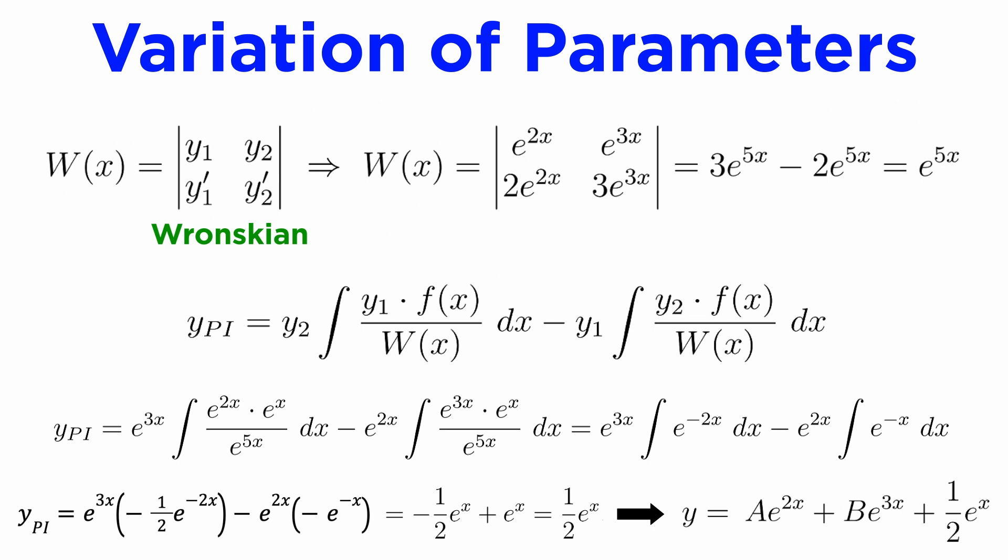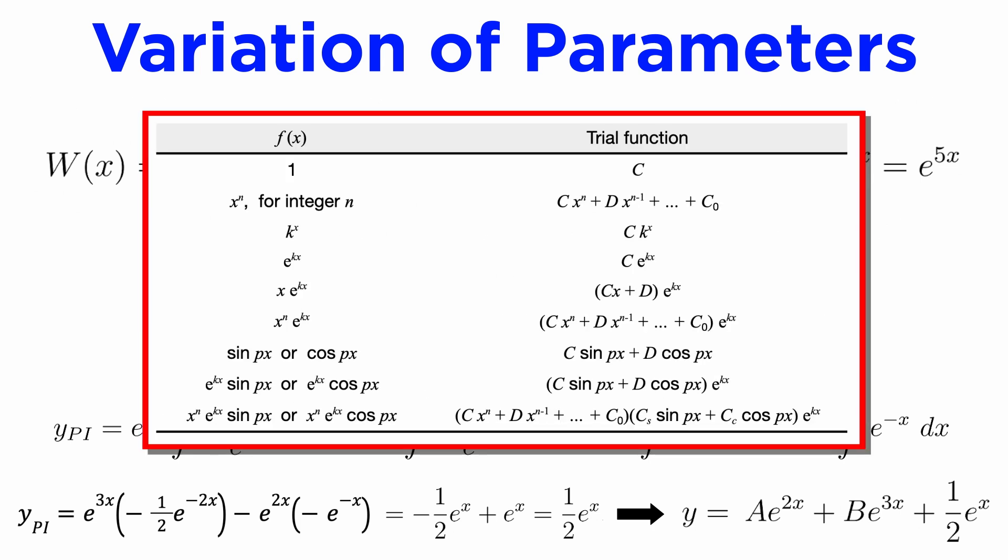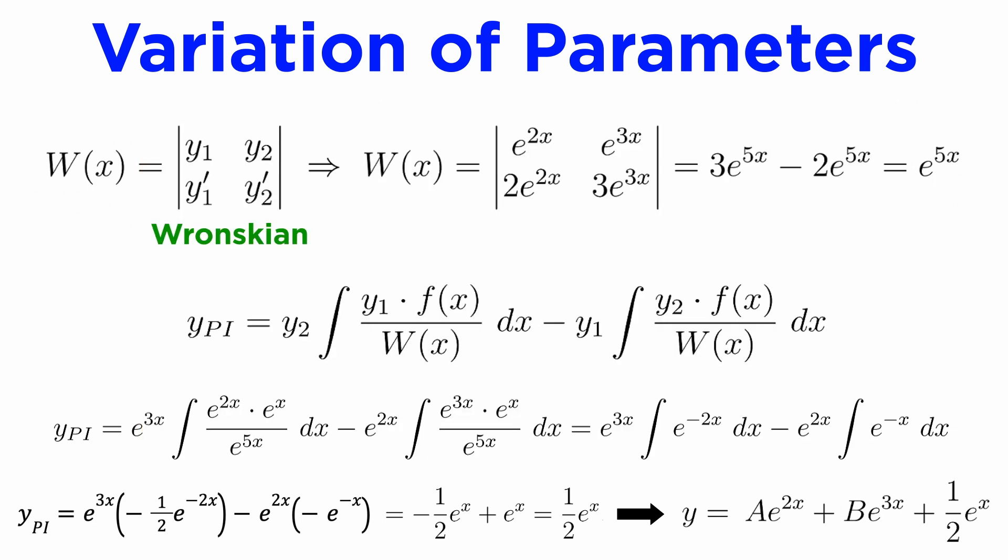With variation of parameters, we don't have to worry about linear independence, and we also aren't restricted to cases where the function f(x) is found in that table. However, it comes at a cost, because we need to have both the Wronskian and that big formula memorized, and those integrals can sometimes get pretty hairy, whereas the method of undetermined coefficients is usually just a bunch of algebra. It is recommended to learn both methods.